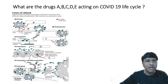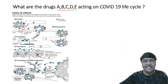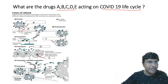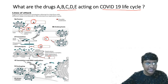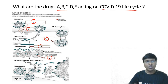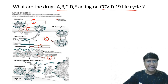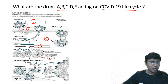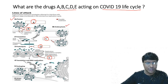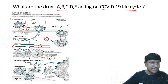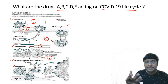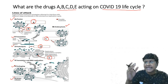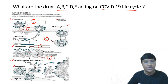Now the treatment part: what drugs act at points A, B, C, D, and E of the COVID-19 life cycle? The life cycle steps are: A — fusion; B — endocytosis; C — translation and proteolysis; D — RNA replication; E — packaging and virion release. What drug acts at point A?